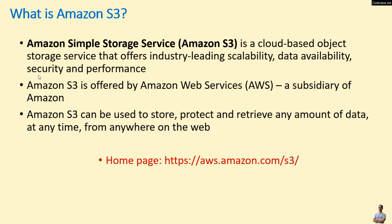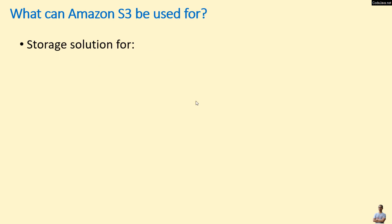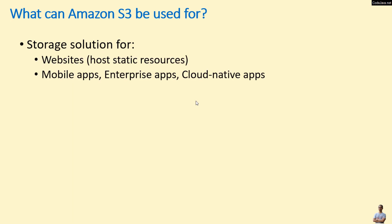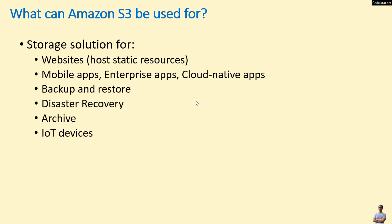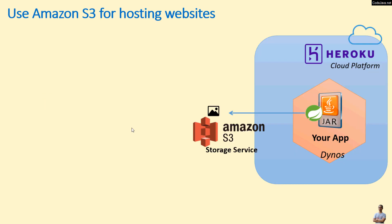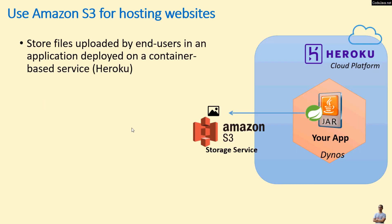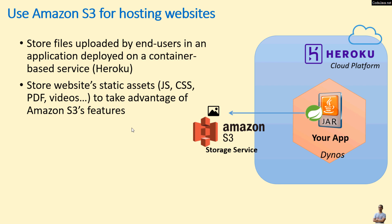This is the homepage: aws.amazon.com/s3. Amazon S3 is an ideal storage solution for websites hosting static resources, mobile apps, enterprise apps, cloud-native apps, backup and restore, disaster recovery, archive, IoT devices, data lakes, and big data analytics. A common use of Amazon S3 for hosting websites is to store files uploaded by end users in an application deployed on a container-based service like Heroku, or to store website static assets such as JavaScript, CSS, PDFs, and videos.